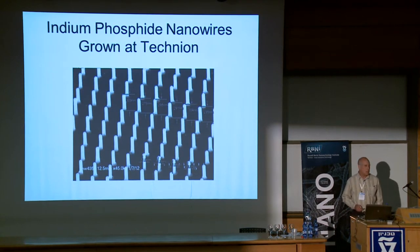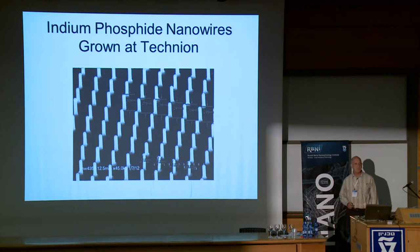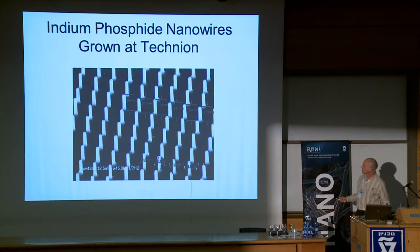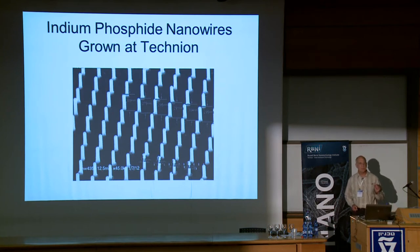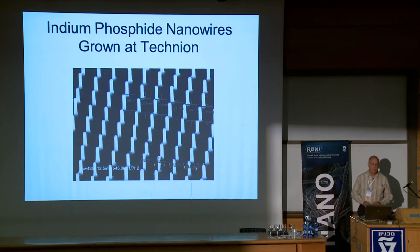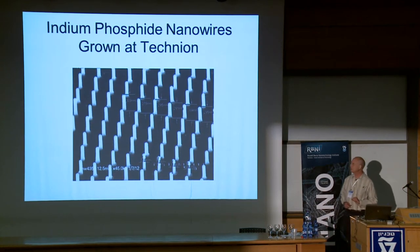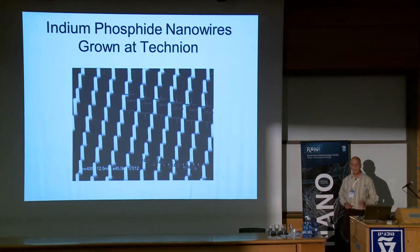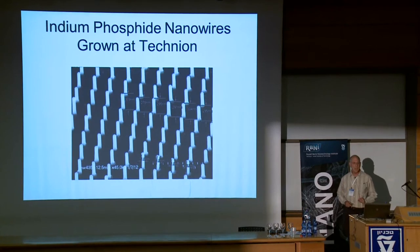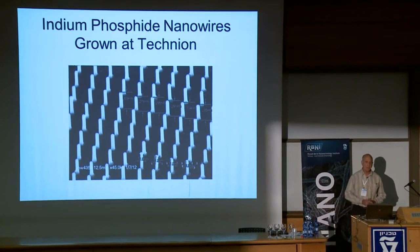There are two different ways to grow these nanowires. One is called the gold catalyst or the vapor-liquid-solid method, where small gold particles on top of the nanowires define where the nanowires are grown. Another method is called selective area epitaxy, where the substrate is covered with some inert layer and holes are opened into these layers and then nanowires can grow out of the layers. We are actually now using a combination of both methods.